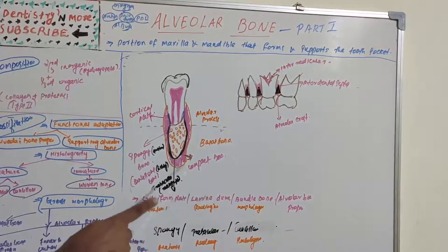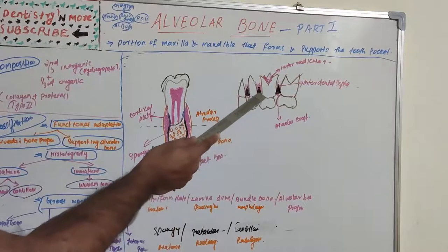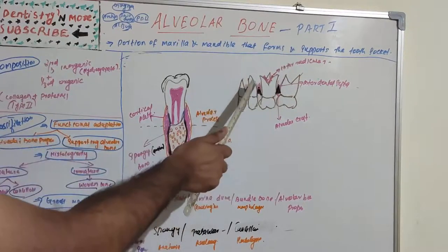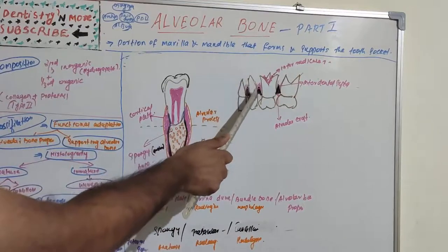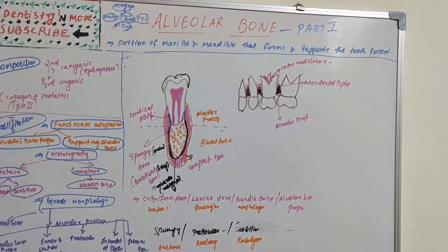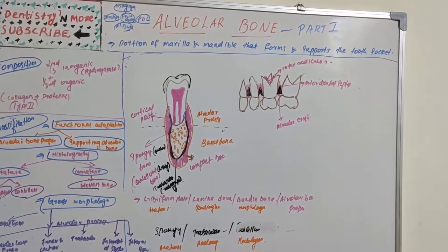Lamina dura appears as a radio-opaque white line on radiograph. A break in continuity of the lamina dura at the proximal aspect of the crest of the interdental septum is considered the earliest radiographic change in periodontitis. If the lamina dura is not continuous at the interdental septum crest, it indicates that the bone in that area is associated with an inflammatory process, indicating early periodontal disease.